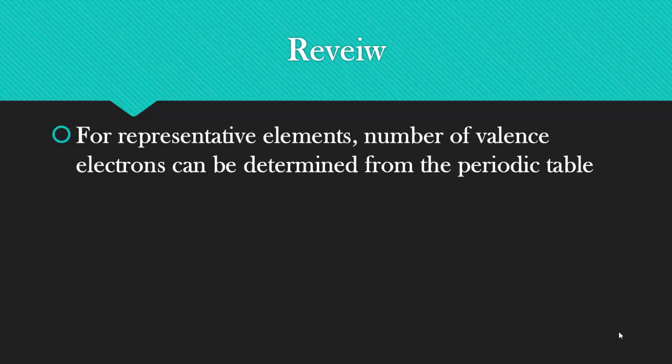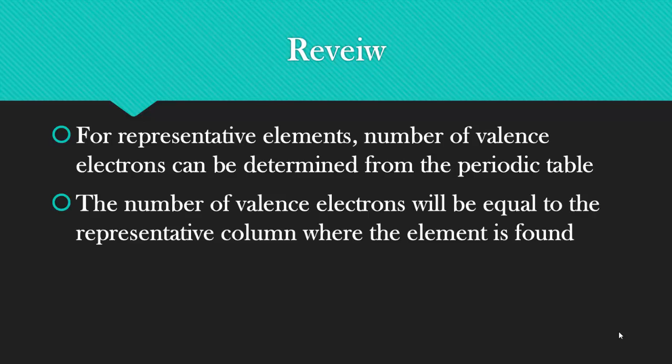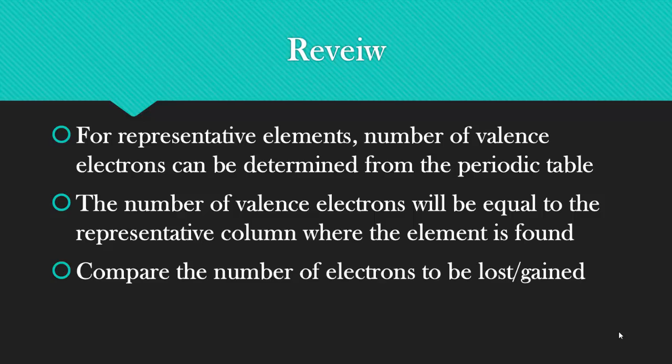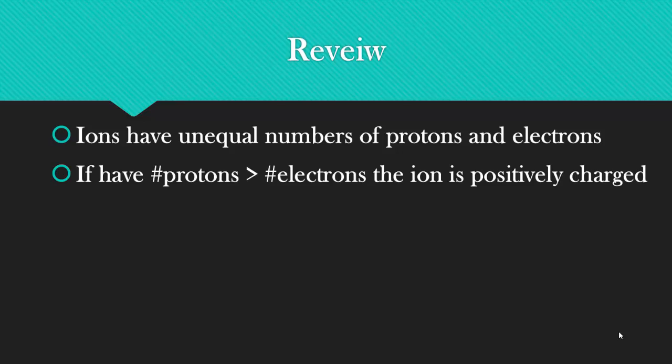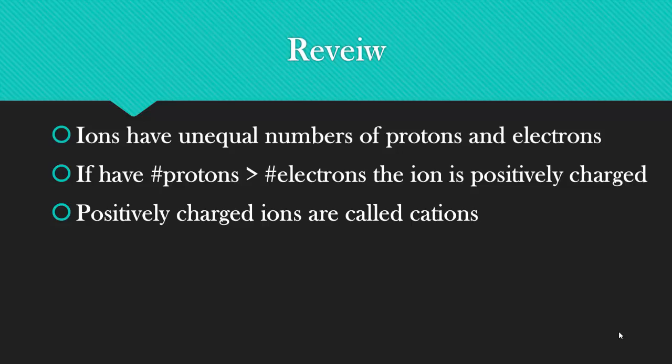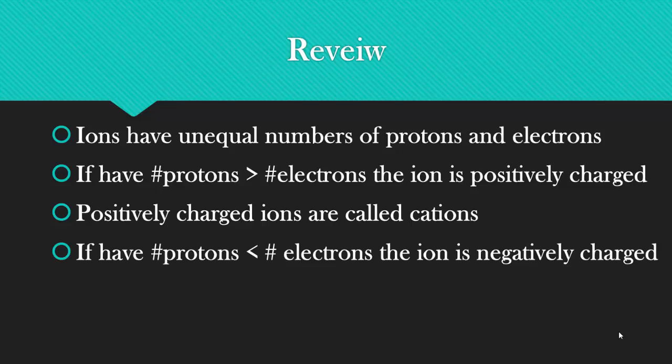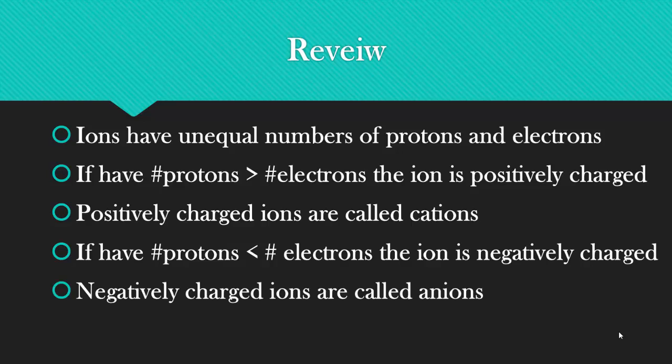So to review how you form ions for representative elements, the number of valence electrons can be determined from the periodic table. You look at which column it is, and that's how many valence electrons it has. Now you compare the number of electrons to be lost or gained. The lower number is what is going to occur. Ions do have unequal numbers of protons and electrons. If you have more protons than electrons, the ion is positively charged, and these are called cations. If the protons are fewer than the number of electrons, then you're negatively charged, and you have an anion.